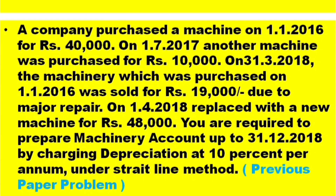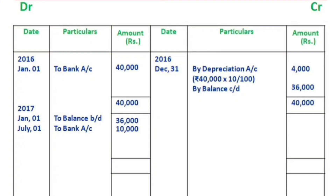On 1-7-2017, another machine was purchased for Rs.10,000. So in 2017, we purchased another machine on July 1st for Rs.10,000. The year-ending for depreciation is December 31st. For the first machine, we put Rs.40,000 into 10 by 100.